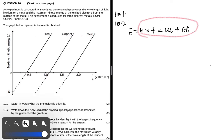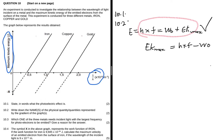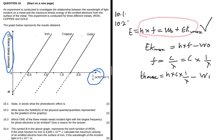On our graph we have one divided by wavelength as our x-axis and the maximum kinetic energy as our y-axis. In this formula we have to make maximum kinetic energy the subject, so EK max equals h multiplied by f minus the work function. Since our graph has one divided by wavelength on the x-axis, we use the fact that frequency equals the speed of light divided by wavelength, which equals c multiplied by one over wavelength. So EK max equals h times c times one over wavelength minus the work function.